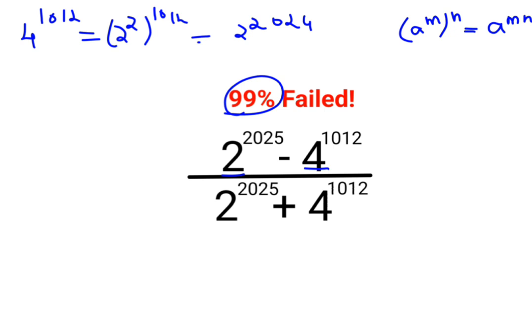So let's write the whole question again. We have 2 raised to 2025 minus, instead of 4 raised to 1012 we will write it as 2 raised to 2024.